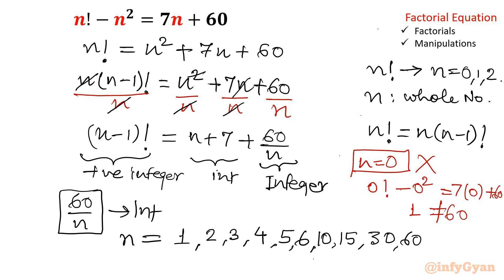So if you will check initially, if you will check then n factorial is equal to n square plus 7n plus 60. So obviously n factorial, let me write there